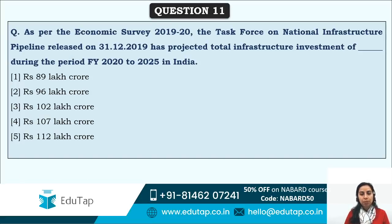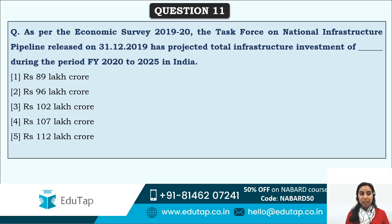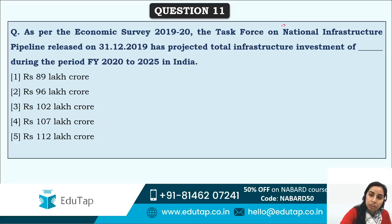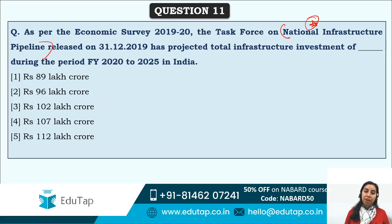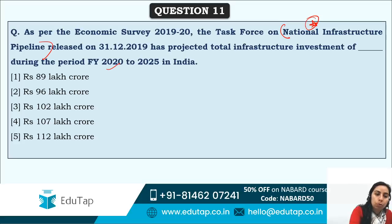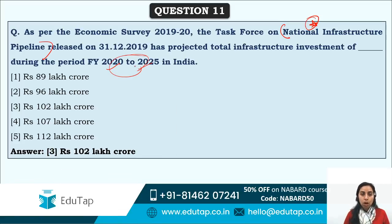The Task Force on National Infrastructure Pipeline, released on 31st December, projected total infrastructure investment of 102 lakh crore rupees during the fiscal years 2020–2025 in India. The National Infrastructure Pipeline in itself is a very important topic covered in current affairs.